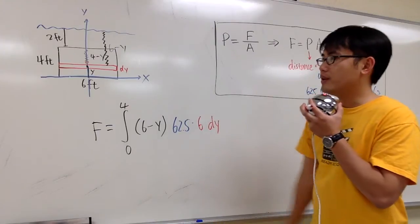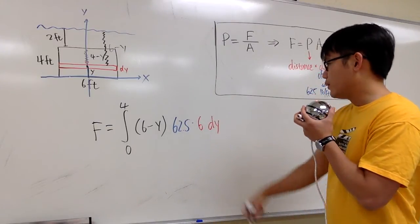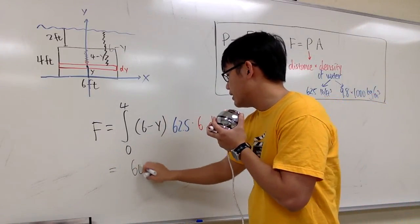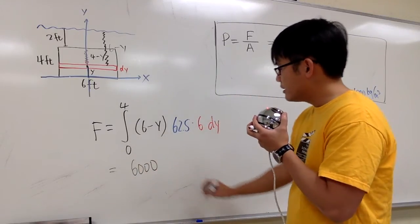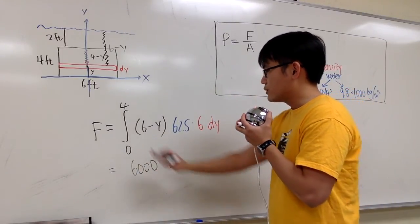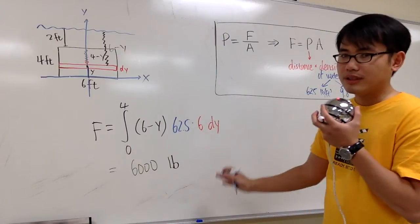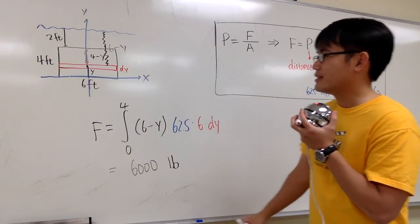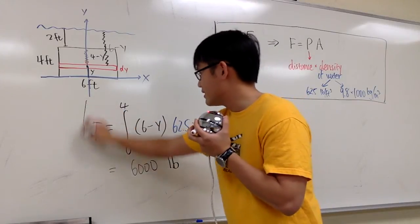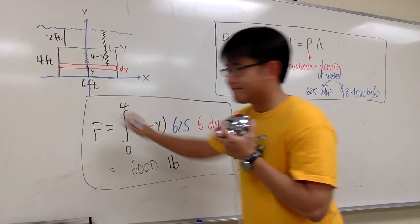And if you work this out, this is going to give you exactly 6,000. And then because we're using force, like this is force, the unit for force is pound in the U.S. customary unit. And this right here is the answer. That's it.